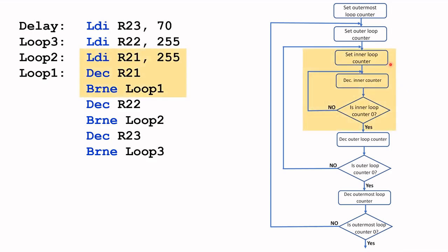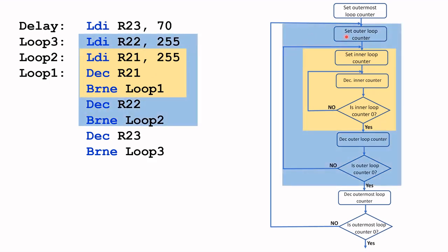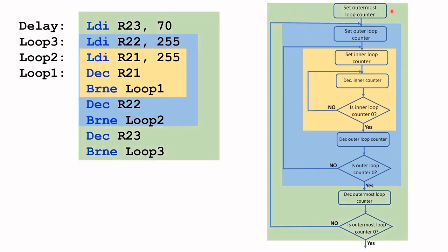This is the inner loop counter, and this is the code that implements the inner loop counter. And this is the outer loop counter, and this is the code that implements the outer loop counter. And finally, we have the outermost loop counter, and this part here that is highlighted in green is the code to implement the outermost loop counter.